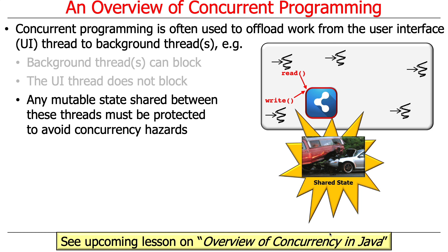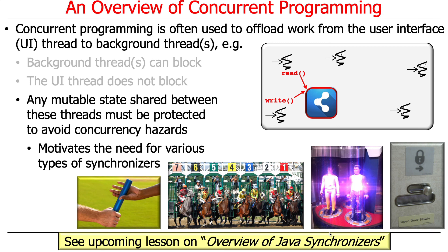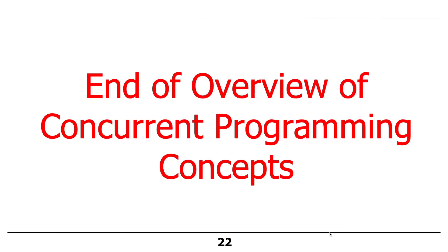Anything shared between different threads has to be protected in some way. There are a couple of approaches: one is to use synchronizers — ensuring only one thing happens at a time; another is to pass messages around, which uses synchronizers under the hood; and another, which we'll focus on in this course, is not to share state in the first place — then the whole problem goes away. Shared mutable state is the root of all evil in concurrent programs. We'll touch briefly on synchronizers like reentrant locks, condition objects, barrier synchronizers, and atomic variables, but the detailed coverage of synchronizers is in my sibling course taught in the spring. That concludes the overview of concurrent programming concepts.